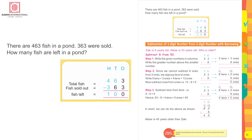There are 463 fish in a pond; 363 were sold. How many fish are left? Total fish: 463, fish sold: 363. Three minus three is zero, six minus six is zero, four minus three is one. So 100 fish are left.